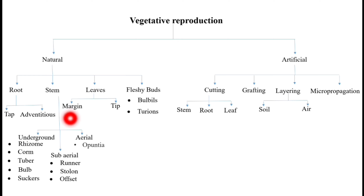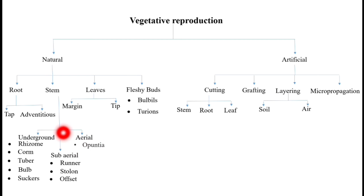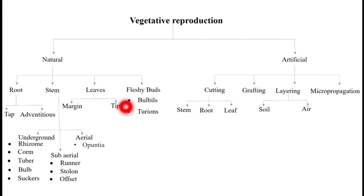In the stem, we will see underground stems and which way new individuals are formed. In the sub-aerial stems, we will see runners, stolons, and offsets. In the stem, we will also see aerial shoots. The leaves of the propagations are marginal and tips. In fleshy buds, we will study bulbils and turions in detail.